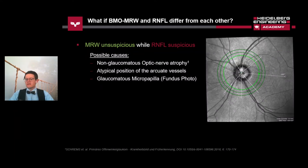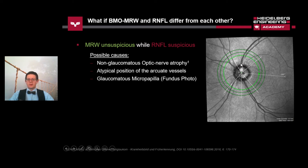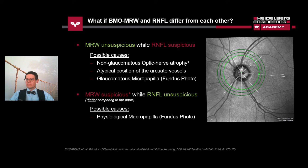Sometimes it can happen that the classification of BMO-MRW and RNFL don't show the same result. If the MRW value is unsuspicious while the RNFL measurement is suspicious, it might indicate non-glaucomatous optic nerve atrophy, an atypical position of vessels, or that glaucomatous micropapilla makes the MRW value appear more or less normal. Therefore it is important to check the fundus photo or the infrared image. Conversely, if the MRW looks suspicious and the RNFL measurement is within normal values, the only possible cause is a physiological micropapilla — again the fundus photo is quite helpful.